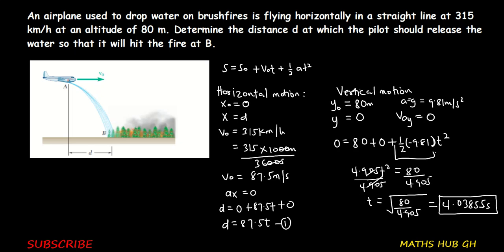Now substituting that value into Equation 1: D equals 87.5 times 4.03855 seconds, which gives D equals 353.37 meters. This is the distance at which the pilot will have to release the water so that it will hit the fire at point b. That's all for this video — thank you very much for watching. Please make sure you like the video and subscribe to the channel.